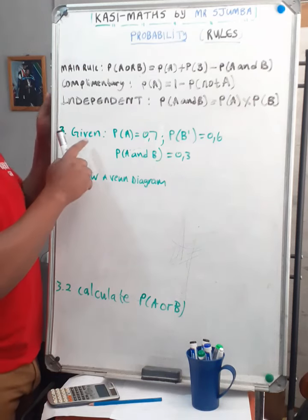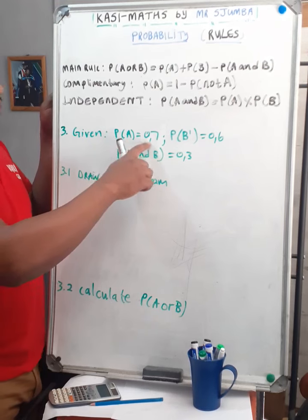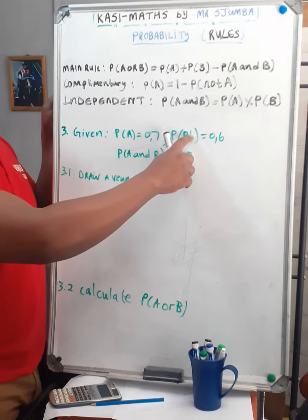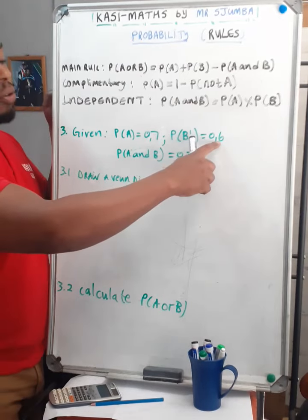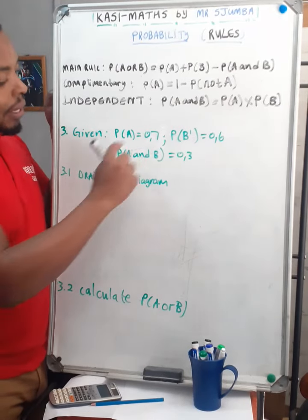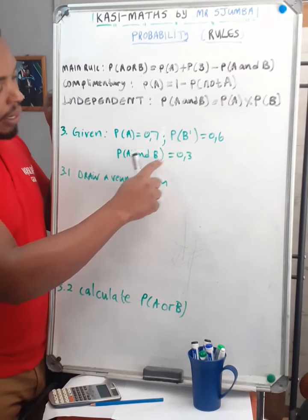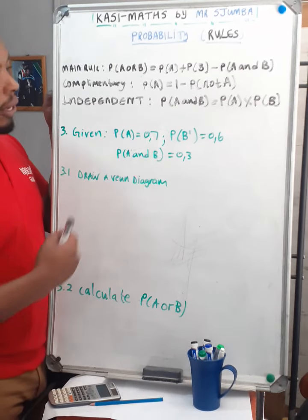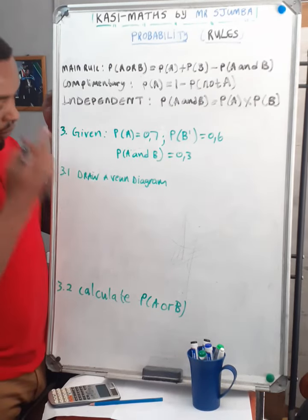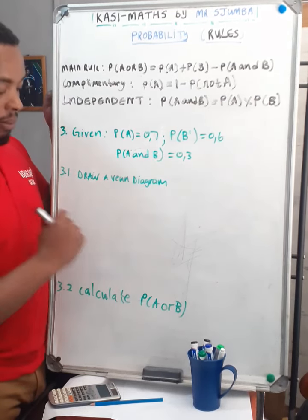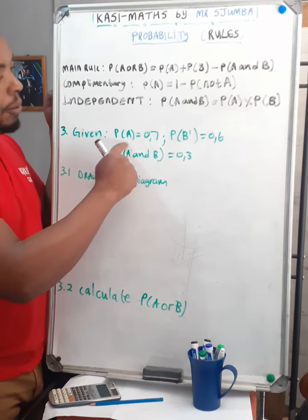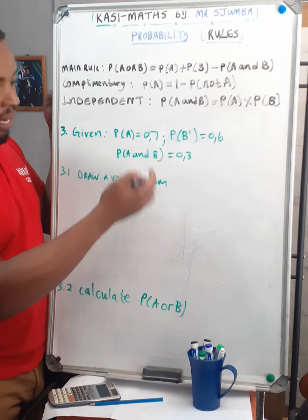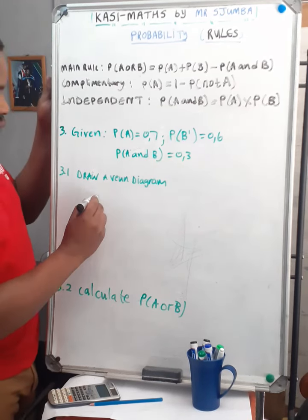In the last example, we are given probability of A equals 0.7, probability of not B equals 0.6, and probability of A and B equals 0.3 — this is the intersection. The first question asks us to draw the Venn diagram. Since we have probability of A and B with the intersection, we should draw our Venn diagram.